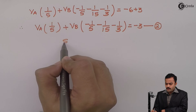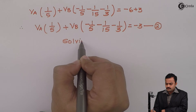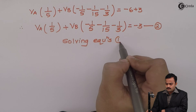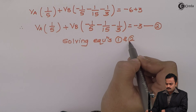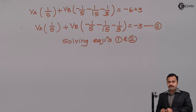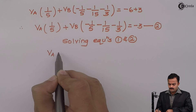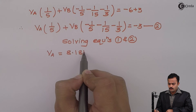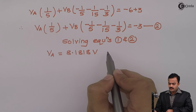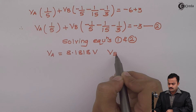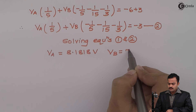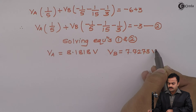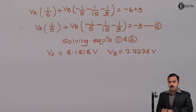Solving equations 1 and 2, we get V_A equals 8.1818 volts and V_B equals 7.7273 volts.